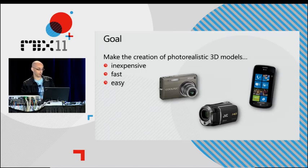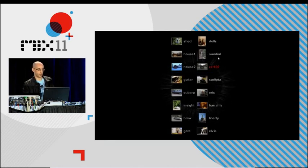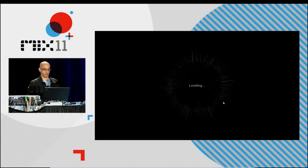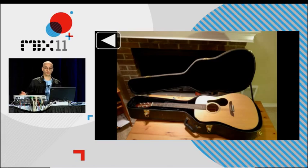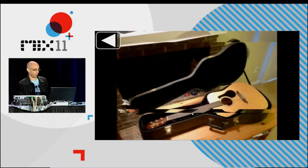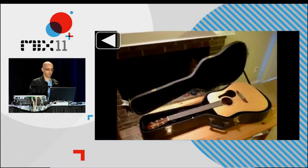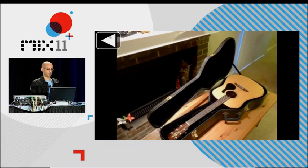Before I describe how we do it, let me give you a demo of some of the kinds of results we're already getting from our research prototype. I'll switch over to a desktop application running using DirectX, and here I'm showing an example of a guitar in its case. We captured 14 photos simply by walking around the guitar and taking pictures, and this is the kind of result we're getting. I hope you'll agree this is a lot more fluid and expressive than just looking at 14 photos, and it gives you a sense of the shape of the object and its surrounding environment.